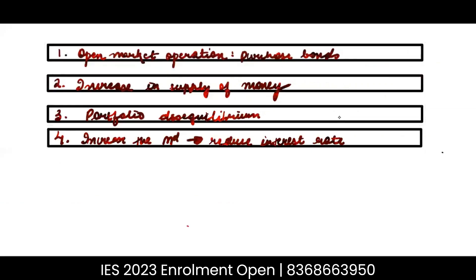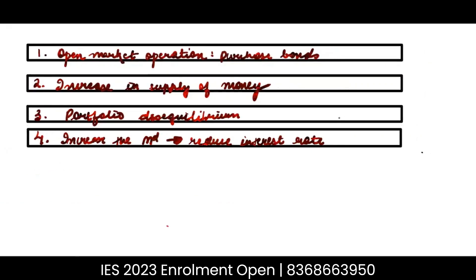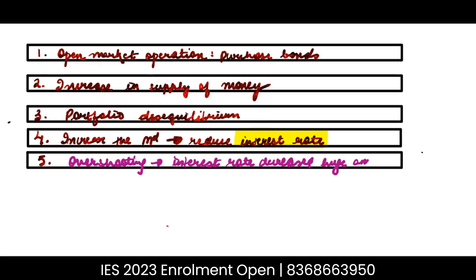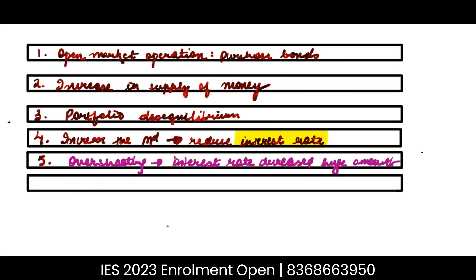Step five: the interest rate had to decrease by a large amount — there was an overshooting of the interest rate in the negative direction. You had to give a disincentive to people to not invest anywhere, so the interest rate decreased by a large amount.